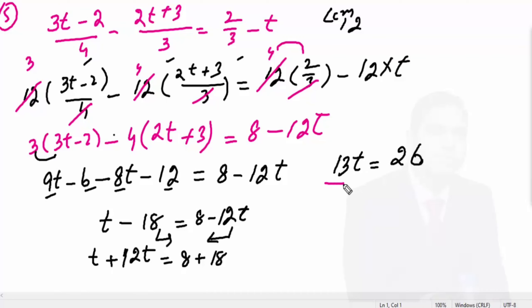Now divide by 13 because we need to find the answer for t. 13 and 13 cancel. t is equal to 26 divided by 13, which is 2. So this is the answer.